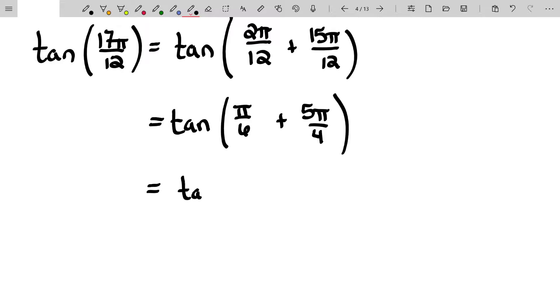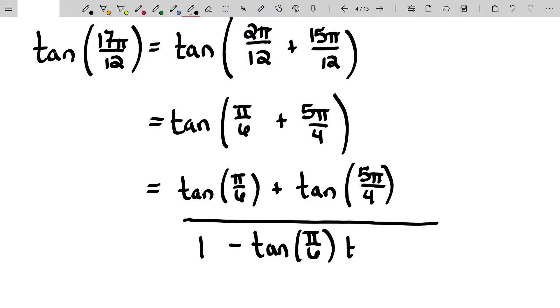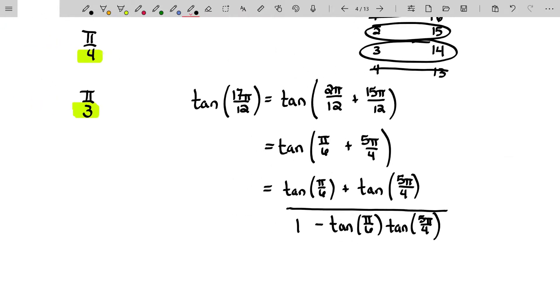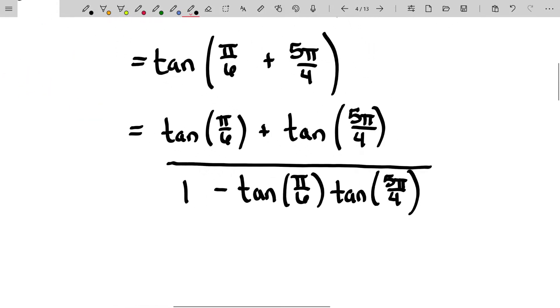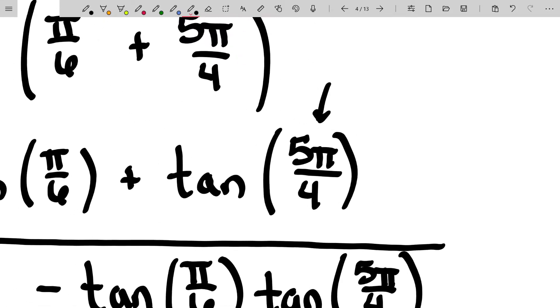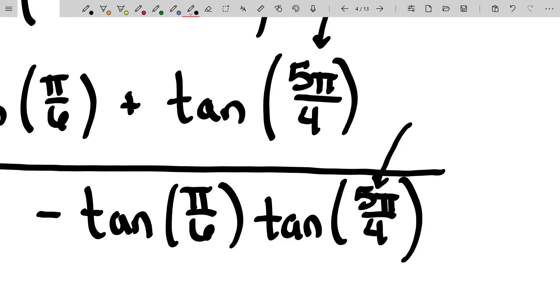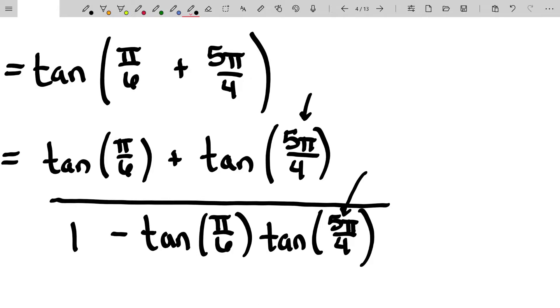But the tangent of the sum of two angles, alpha plus beta, is equal to the tangent of the first angle plus the tangent of the second divided by one minus the tangent of the first angle times the tangent of the second. So again, this is going to be the tangent of the first angle plus the tangent of the second divided by one minus the tangent of the first angle times the tangent of the second angle. And now all I need to do is figure out what those tangents of those angles are. And I have to actually consider quadrants and I've had some students in office hours recently who are really having a hard time with large angle measure. So let me just reiterate what you would do here.